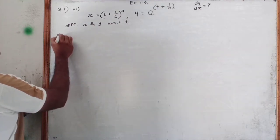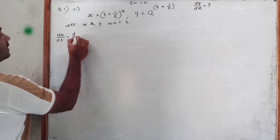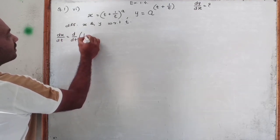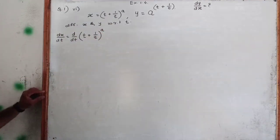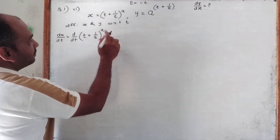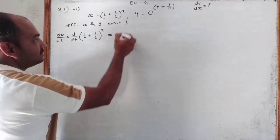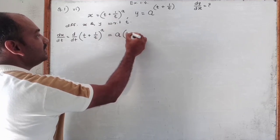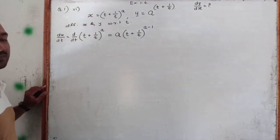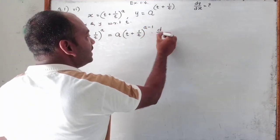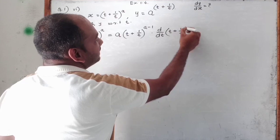dx upon dt is equal to d by dt of t plus 1 upon t, bracket raised to a. So by the power rule here we can differentiate this like: a in brackets t plus 1 upon t, bracket raised to a minus 1, into d by dt of t plus 1 upon t.